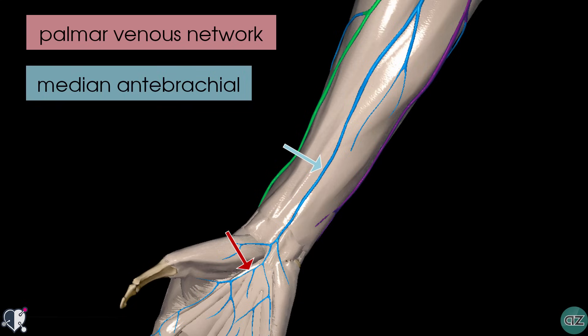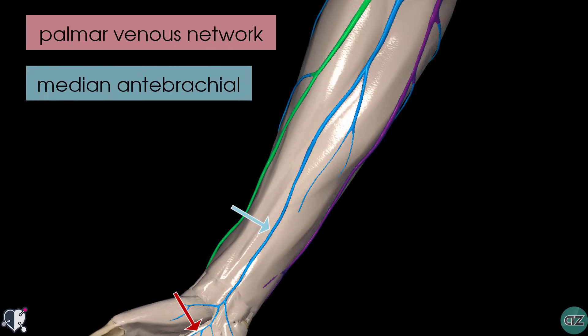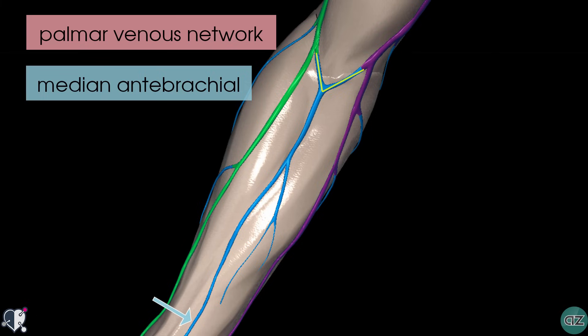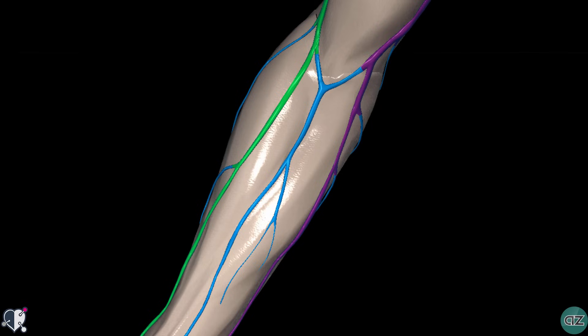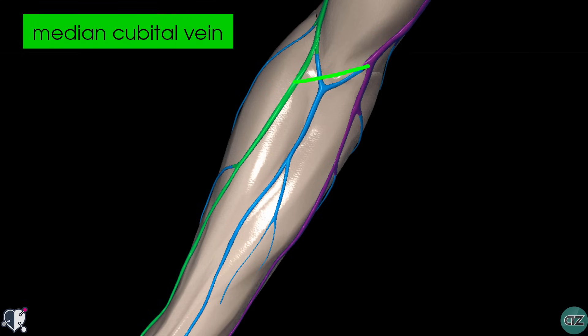So median means middle, anti means in front of, and brachial refers to the arm — giving us the median antebrachial vein. In this particular model, the median antebrachial vein is shown splitting into two and connecting to the cephalic and the basilic veins. These two veins are known as the median cephalic vein and the median basilic vein respectively. Another common configuration at the anticubital fossa is where the cephalic vein drains into the basilic vein directly via the median cubital vein. In this case, the median antebrachial vein may instead drain into the basilic vein rather than forming the median cephalic and median basilic veins.